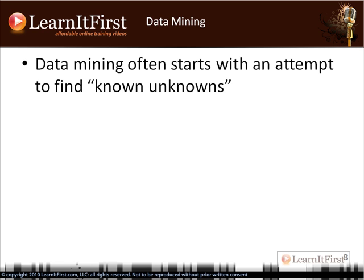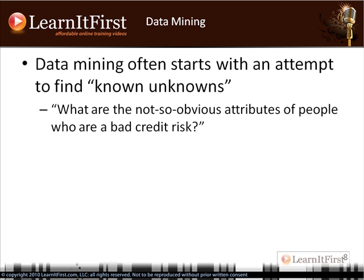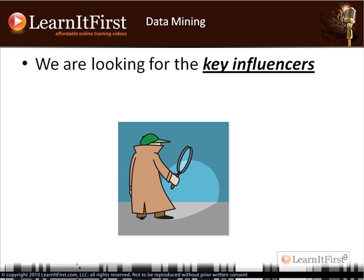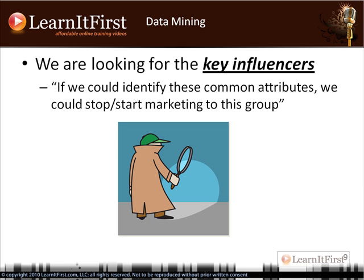What we're often looking for — to use the old Donald Rumsfeld quote — is the known unknowns. What are the not-so-obvious attributes of people who are a bad credit risk? Maybe in our data mining algorithms we want to stop marketing to people who are a bad credit risk, and we need to know what the attributes are: are they generally married, are they in a certain age group, have they completed university? What are the common patterns for people who are a bad credit risk? We're looking for the key influencers — a big term in data mining.